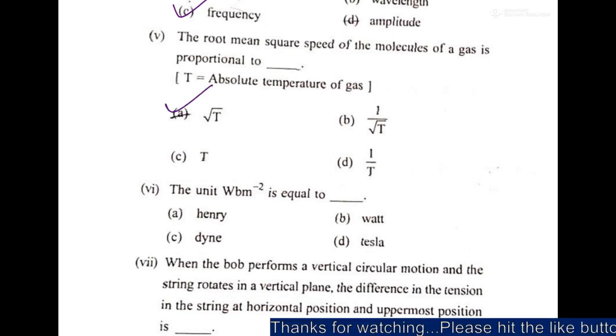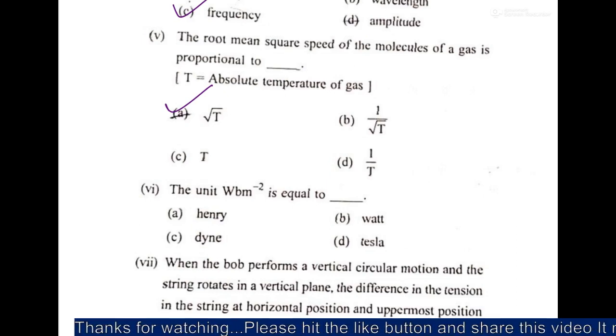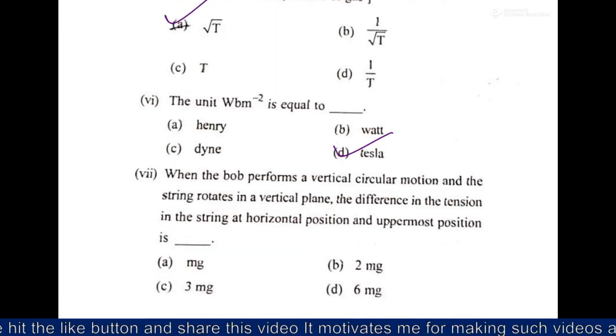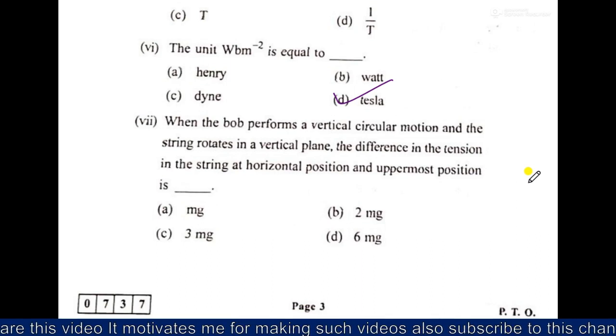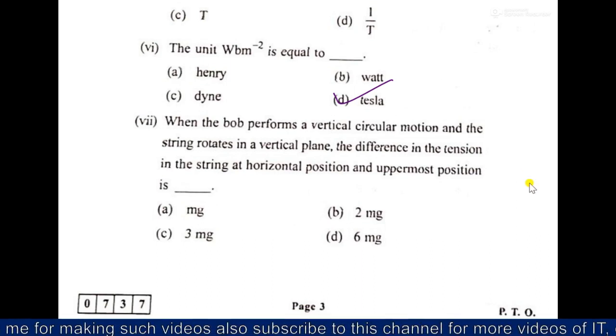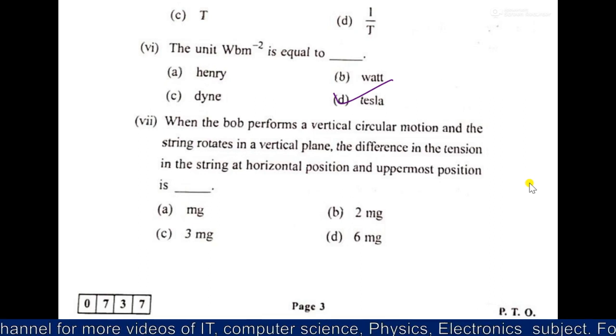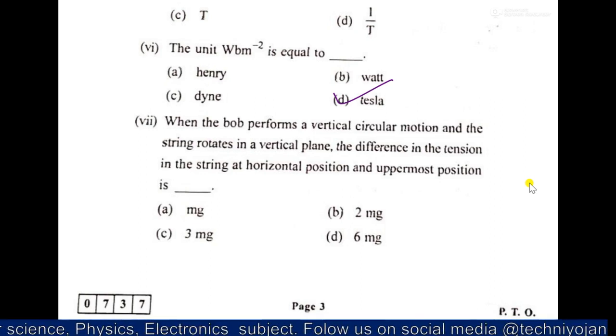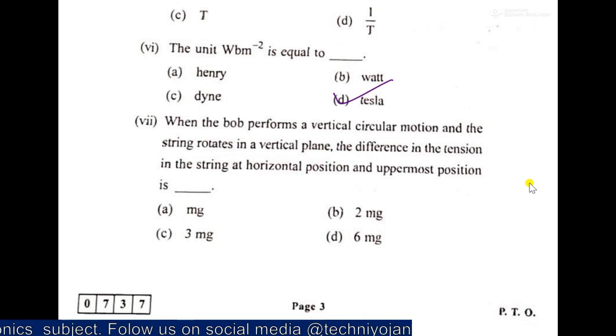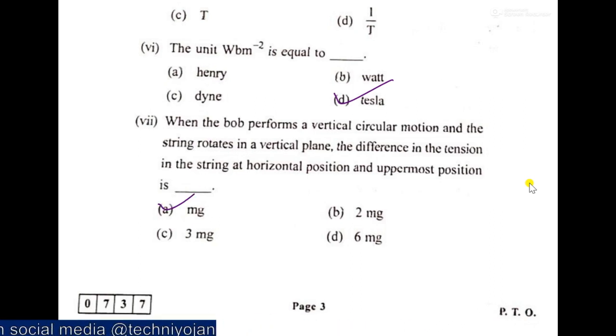Then the unit Weber per meter square is equal to Tesla. Then the seventh one, when the bob performs a vertical circular motion and the string rotates in a vertical plane, the difference in the tension in the string at horizontal position and uppermost position is mg.